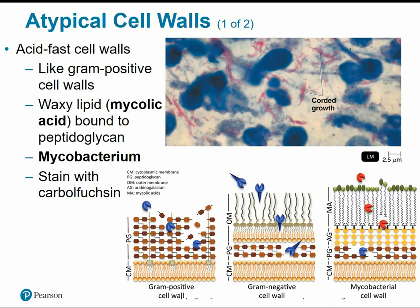Not all cells will fall under the gram-stain rule. We have some atypical cell walls. Acid-fast cell walls will appear or stain like gram-positive cell walls, but they're not a true gram-positive. Remember, the gram-positive result was due to the thick peptidoglycan layer. Acid-fast bacteria have a waxy lipid layer called mycolic acid bound to their peptidoglycan, which can also trap gram stains — so they may appear gram-positive, but it's not because of the thick peptidoglycan. These cells require their own special stain: the acid-fast stain uses carbol fuchsin, a red or pink stain. Mycobacterium are the type of bacteria with this mycolic acid.